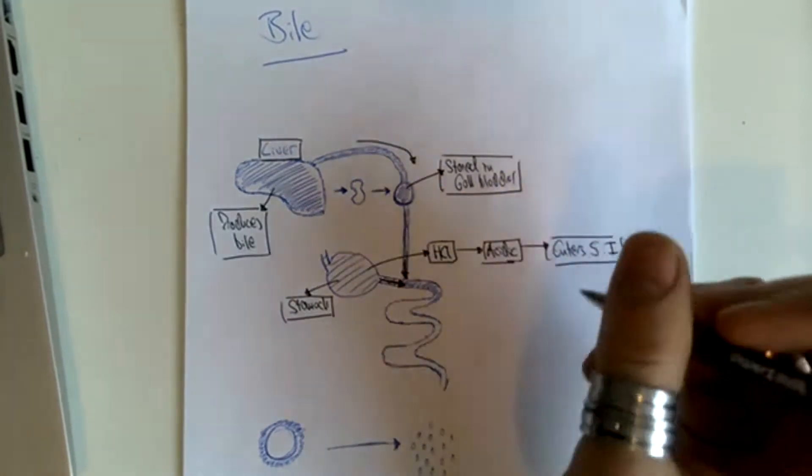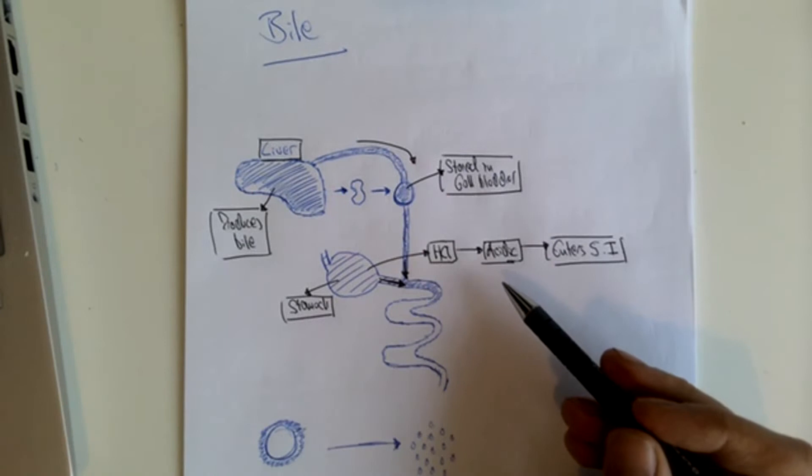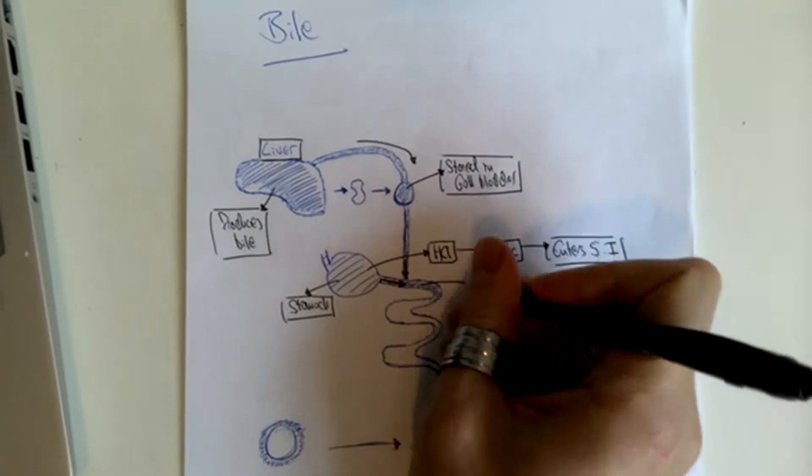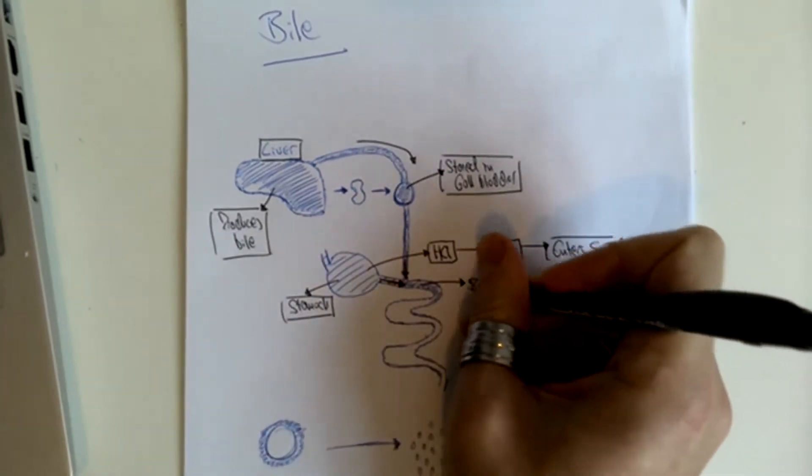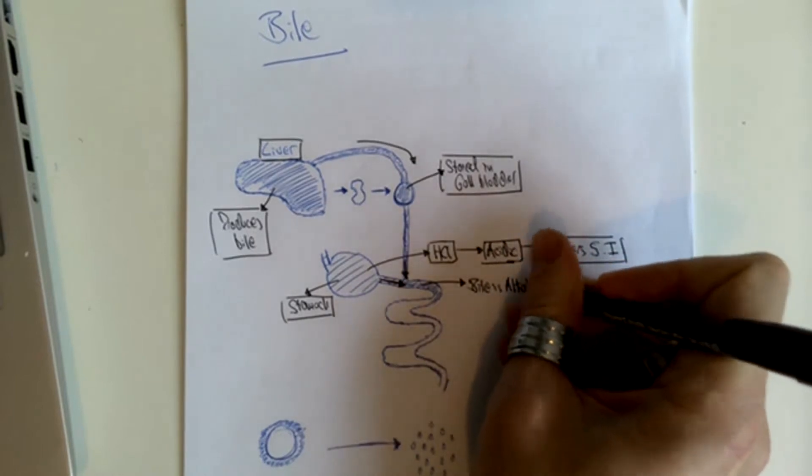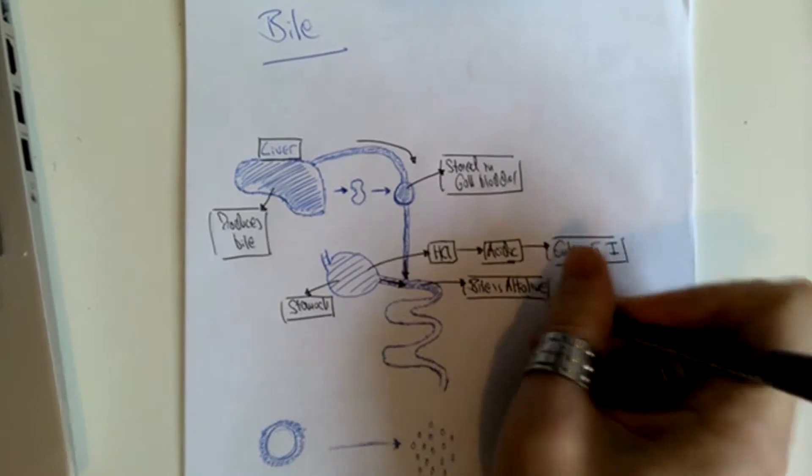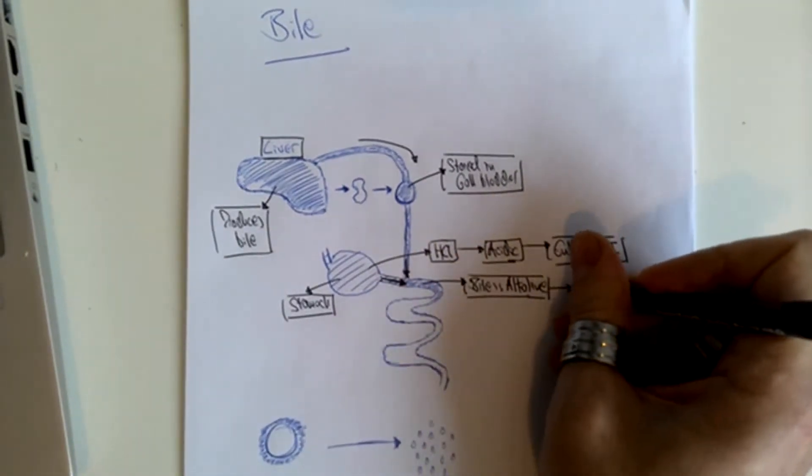The acidic food mixture from the stomach mixes with the bile, which is alkaline. What this does is it neutralizes the hydrochloric acid.